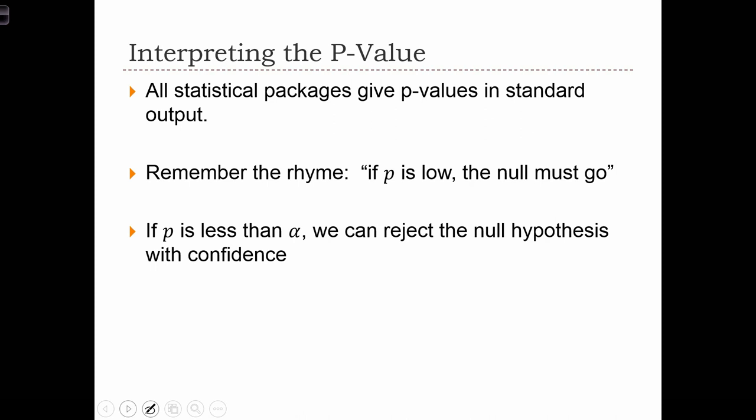Specifically, what this means is that if p is less than alpha, so alpha you are determining, the analyst is determining the significance level that they're interested in, say 5% or 1%. If p is less than that alpha, then we can reject the null hypothesis with confidence.